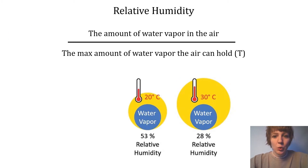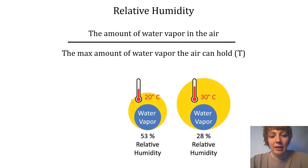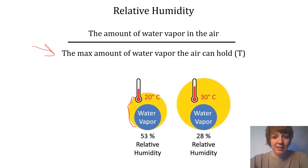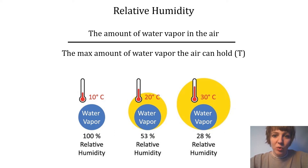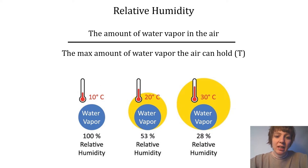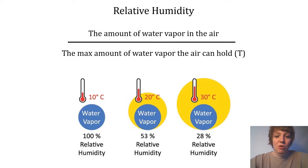As you cool that air down, the amount of vapor it is able to contain gets smaller — that's why the yellow circle gets smaller, because the maximum amount of water vapor the air can possibly hold is less at colder temperatures. If you cool that air parcel all the way down to the point where the amount of water vapor in the air equals the maximum amount it's capable of holding, you have reached 100% relative humidity.